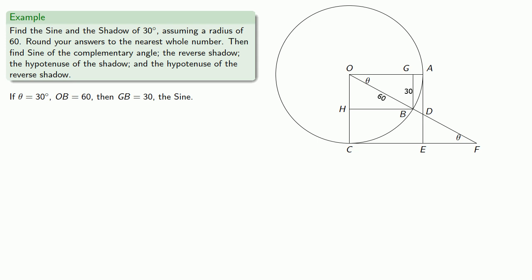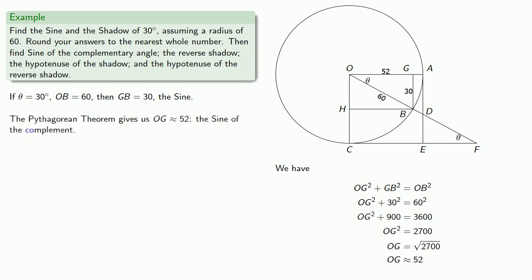Now we have two sides of a right triangle, so we can use the Pythagorean theorem to find the third side, which is the SINE of the complement. We'll start calling it the complement SINE.